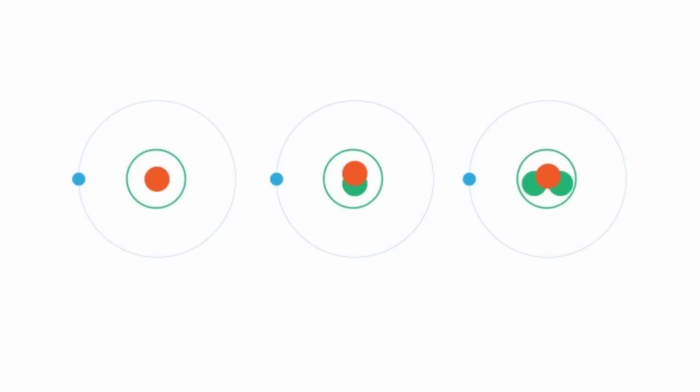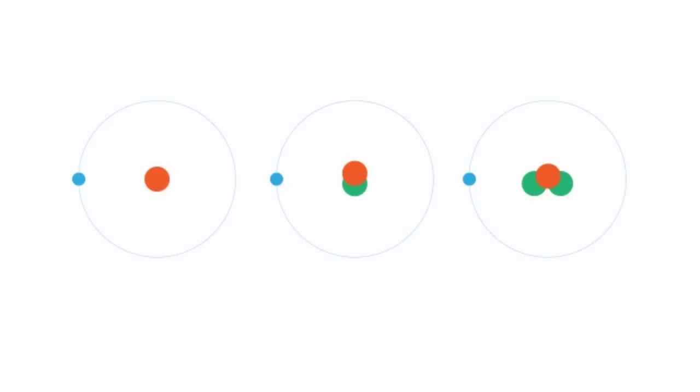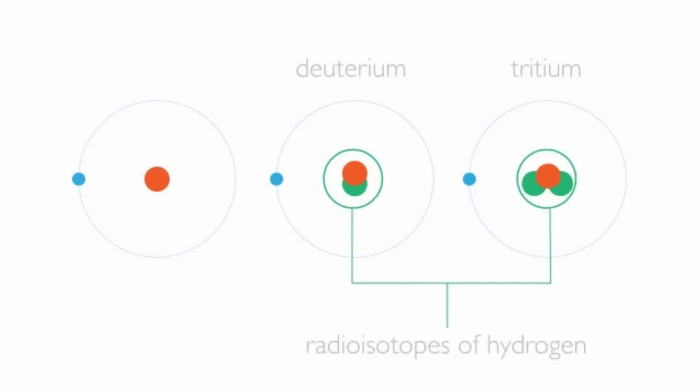And nuclei behave in a similar way, and they will try to stabilize themselves. If there are too many protons or too many neutrons, the nucleus can spontaneously rearrange itself and throw out particles in the process. This is essentially what happens in radioactive decay. Isotopes that have unstable nuclei like this are known as radioactive isotopes or radioisotopes. In our hydrogen examples, both deuterium and tritium are unstable and are hence radioisotopes of hydrogen.